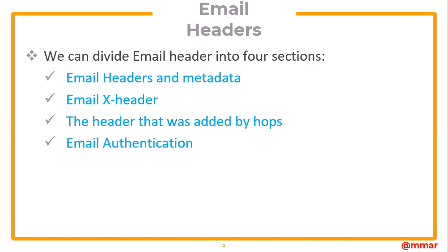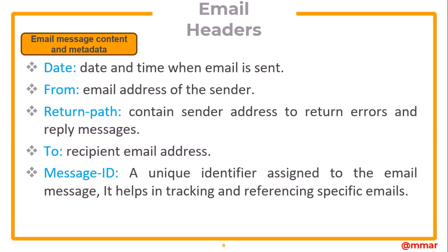There are a number of headers in an email which we need to understand. We can divide the email header into four sections: email headers and metadata, email X-headers, headers added by hops, and email authentication. In the email headers, we have the date and time when the email is sent, the from address of the sender, the return path which contains the sender's address to return errors and reply messages, the recipient's email address, and the message ID, which is a unique identifier assigned to the email message that helps in tracking and referencing specific emails.